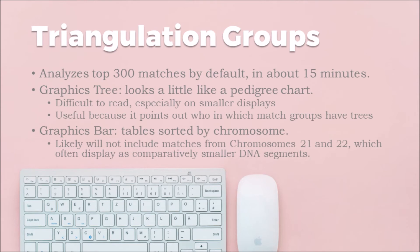The triangulation groups tool is a little bit different. It performs the same function but displays results differently. By default it analyzes the top 300 matches you share with a person, and it takes between 9 and 14 minutes — basically up to 15 minutes — so it takes a lot less time to run than the standard triangulation analysis.